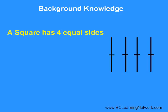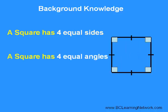A square has four equal sides. A square also has four equal angles. Do you remember the measure of each angle? Each angle measures 90 degrees.